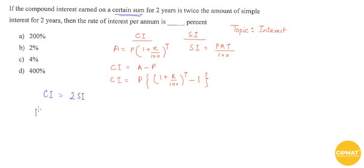We have P times (1 + R/100) squared, because T equals 2, minus 1, equals two times P times R times 2 divided by 100.